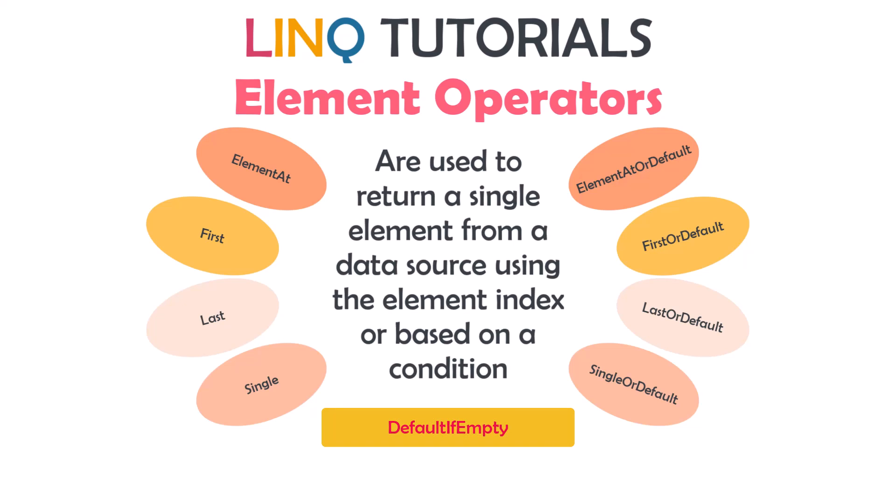As you see, we have the same operator two times. On the right side are the operators with 'or default', and on the left side we have the operators without anything. For example, First and First or default, Last and Last or default, and so on. What is the difference between both? When to use which one? And which one is recommended to use?